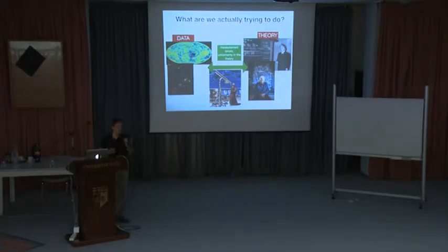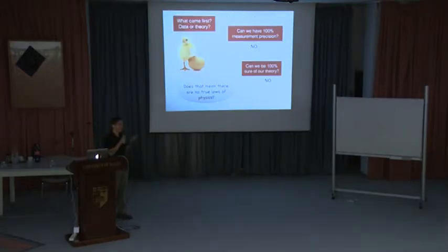What comes first? Data or theory? Well, this is a chicken and egg situation. The data is there and then you construct the theory, but sometimes you have the theory and then you design your experiment, you measure your data, and then you go back to the theory and adjust. So you've seen that we can never have 100% measurement precision and we can never be 100% sure of our theory.